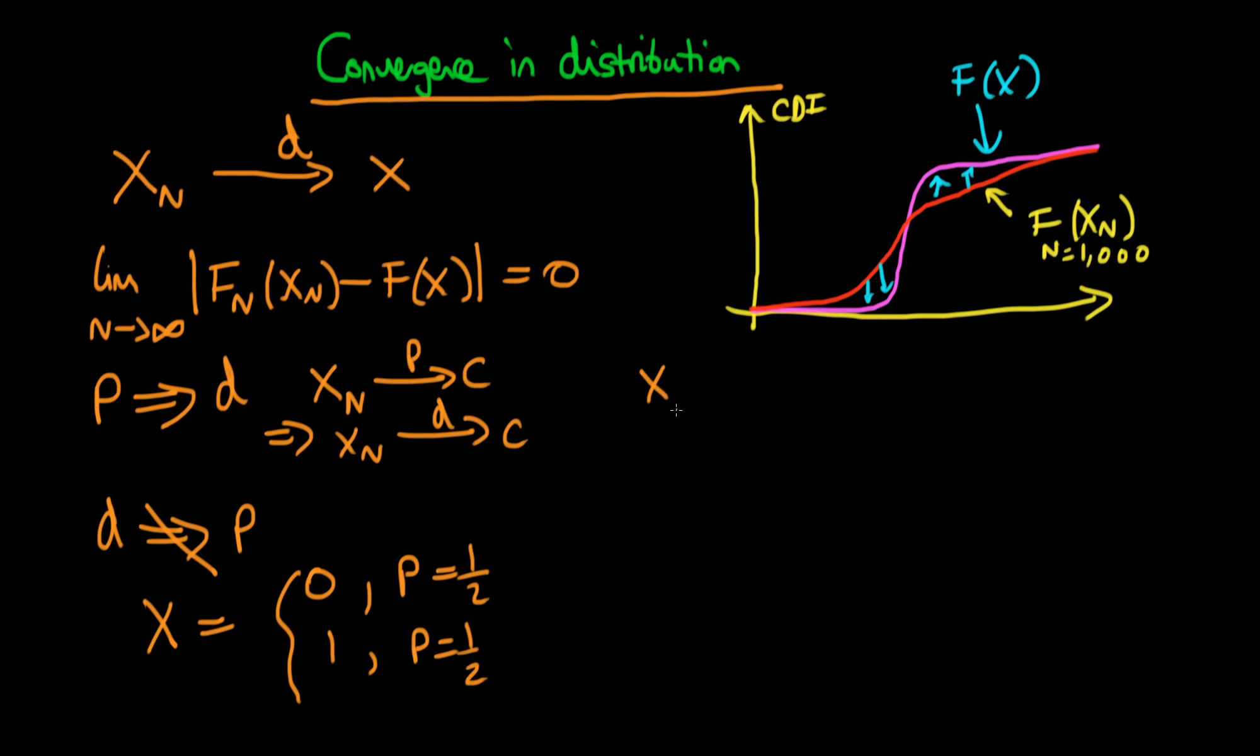And trivially I'm going to state that our Xn is just equal to X for all n. So trivially we know that Xn converges in distribution to that of X, right, because it's just the same thing as that variable.